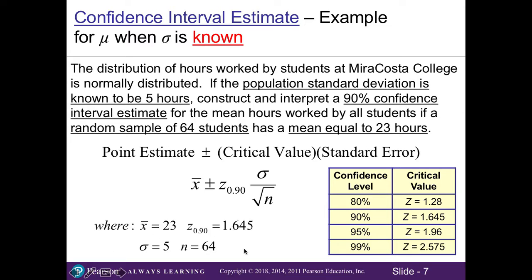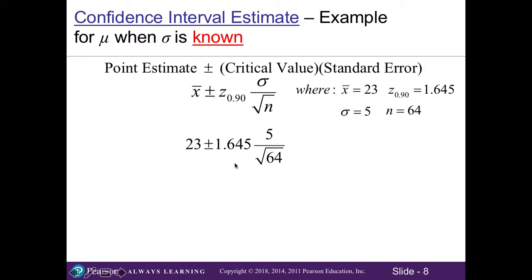Once I set up the variables into the formula, I want to solve for everything to the right of my plus or minus sign. So I'm going to take 1.645 multiplied by 5 divided by the square root of 64. This will give me 23 plus or minus 1.03. To get my confidence interval estimate, I will subtract 1.03 from 23, and then I'm going to add 1.03 to 23. This gives me my interval of 21.97 hours to 24.03 hours.